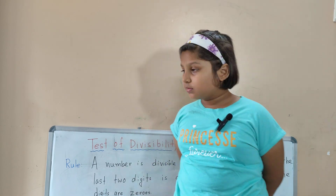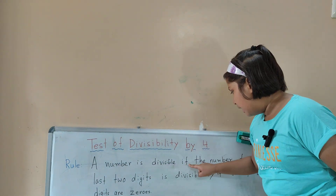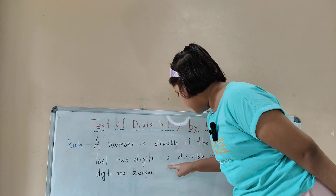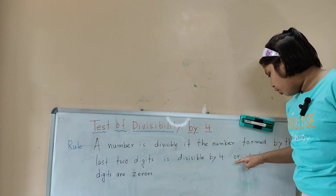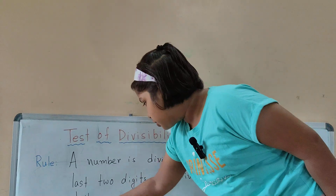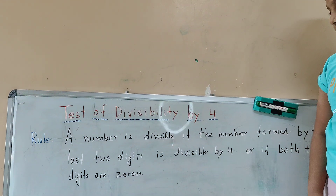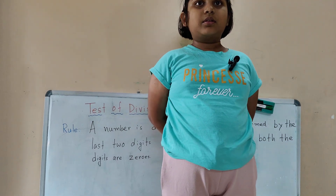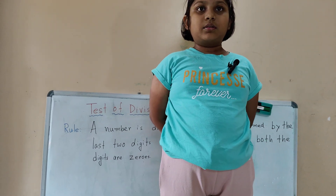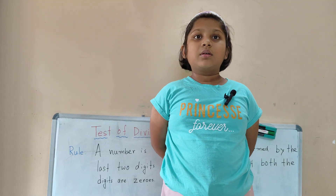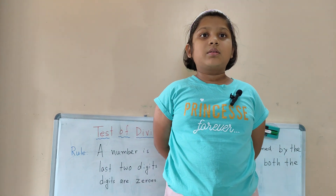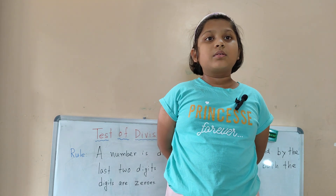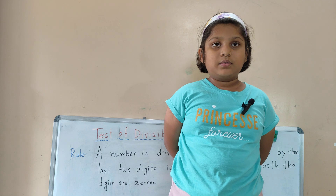Read the rule. A number is divisible by 4 if the number formed by the last 2 digits is divisible by 4, or if the last 2 digits are both 0s, then the number is also divisible by 4.